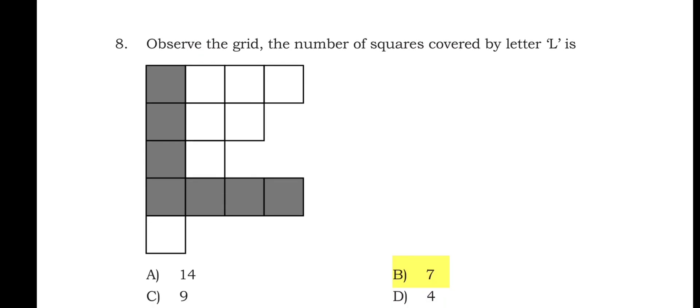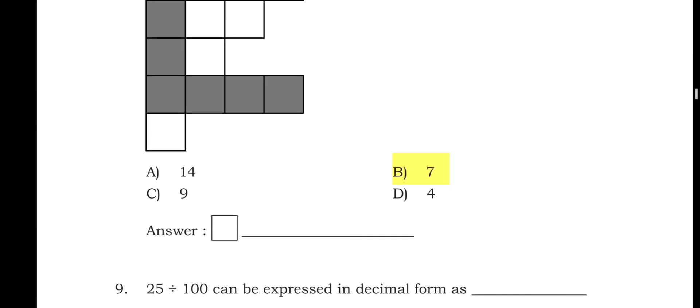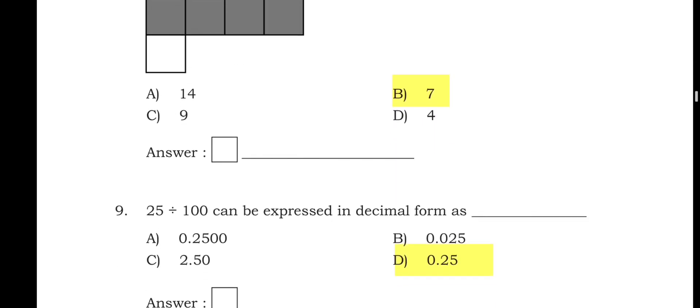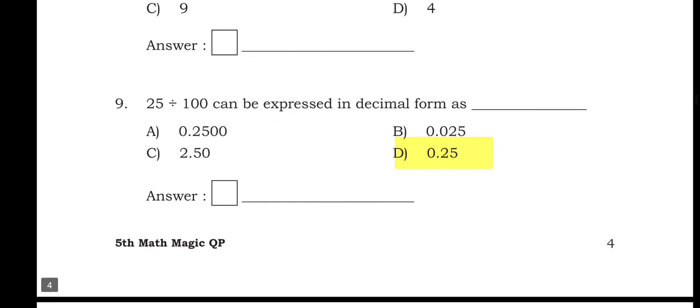Question 8: observe the grid — the number of squares covered by letter L is. Counting the boxes in the L shape: one, two, three, four, five, six, seven. Option B is the right answer: seven.